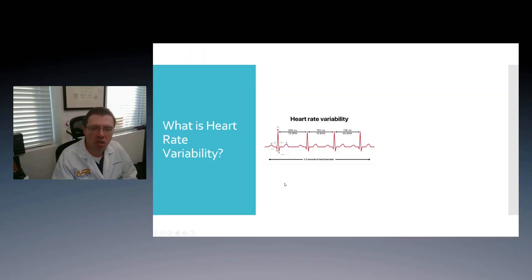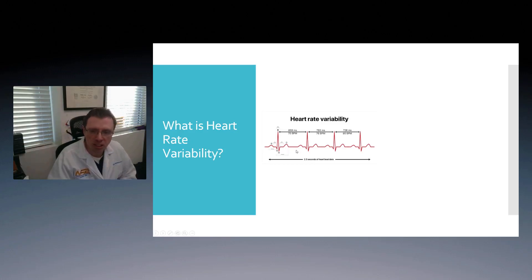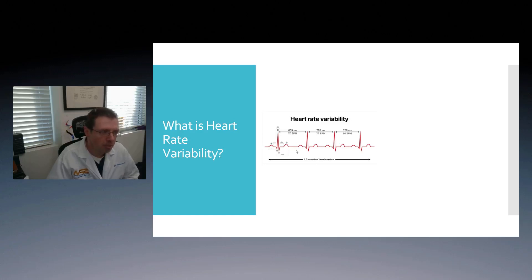Let's talk about what heart rate variability is. It is the timing between each beat of the heart. Traditionally it's the R wave — you can measure the time that occurs between one R wave and another, and that is typically in milliseconds, that's one thousandth of a second. When we check our heart rate, there's actually normal variability by a few numbers. We're not measuring heart rate when we're measuring heart rate variability — what we're looking for is this little beat-to-beat difference in timing.